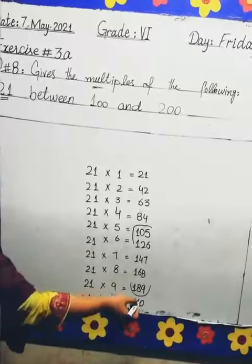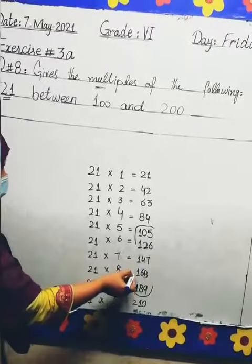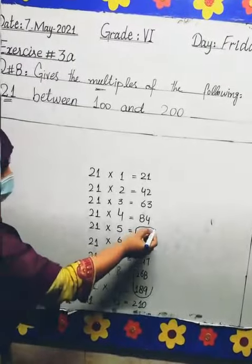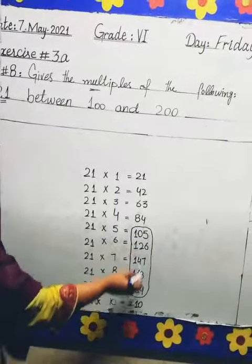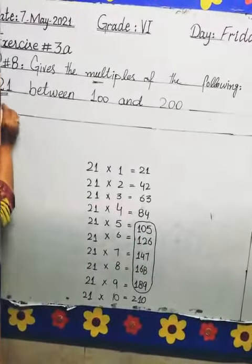Since 210 exceeds 200, we stop here. Now we have our answers - all the multiples of 21 between 100 and 200.